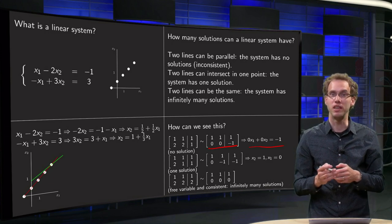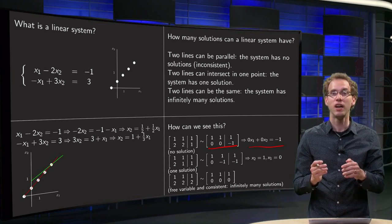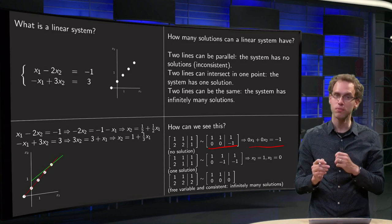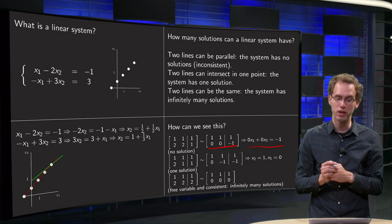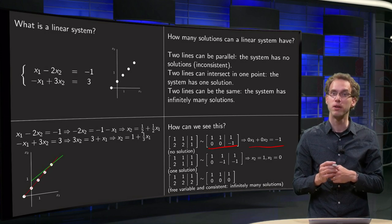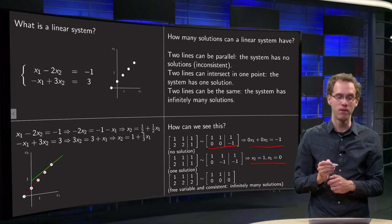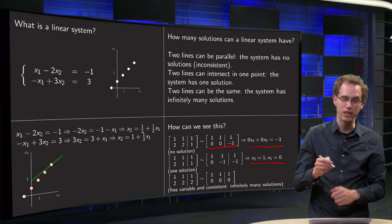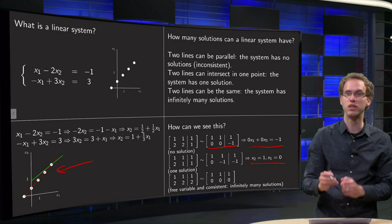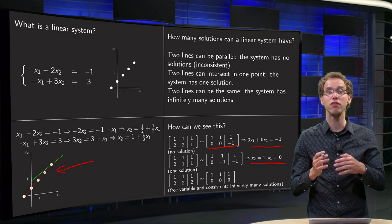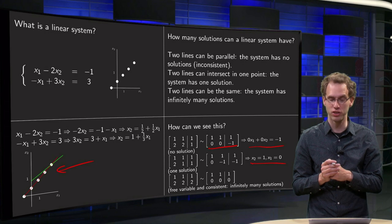How would that look geometrically? Try to plot those two lines from those equations, and if you do it correctly, you will observe that your lines are indeed parallel. For the second case: x1 plus x2 equals 1 and 2x1 plus x2 equals 1. We do one row reduction step and observe that we find one solution: x2 equals 1 and x1 equals 0. If you have a case with one solution, the two lines have one point of intersection. Try plotting the two lines and verify this for yourself.